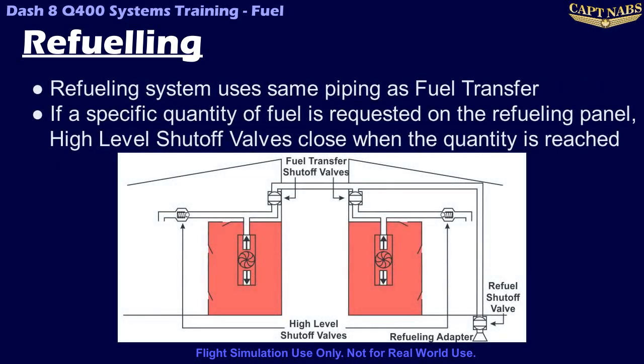The refueling system uses the same plumbing as the fuel transfer system; both tanks are filled through the same pipes used for a fuel transfer. If a specific fuel quantity is preselected on the refueling panel, each level control shutoff valve will close when that tank reaches half of the preselected fuel, thus ensuring the fuel tanks are balanced at the end of each fueling. The refueling panel also supports defueling, where fuel can be sucked from the tanks through the pressure refueling connection.